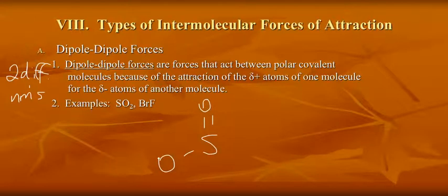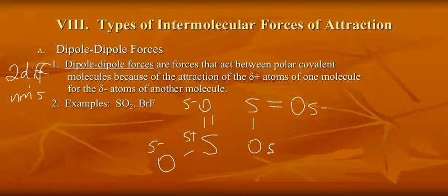Because of the differences in electronegativity, oxygen is slightly negative and sulfur becomes slightly positive. Oxygen hogs the electron density. Well if another molecule of SO2 comes along, there will be an attraction between the oxygen and the sulfur, because the oxygen is slightly negative and the sulfur is slightly positive.